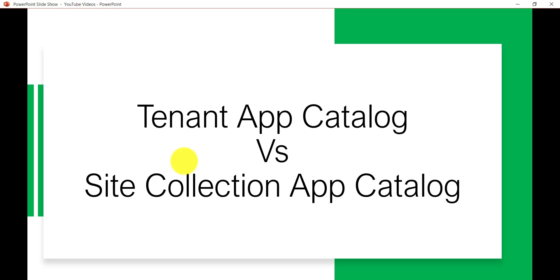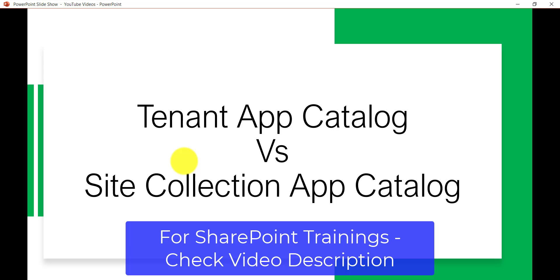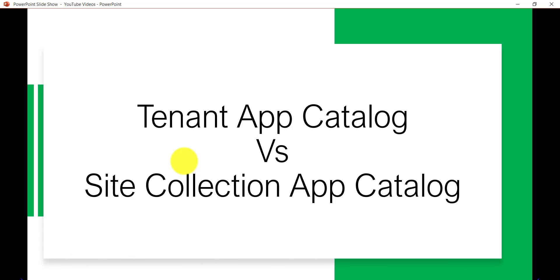Apart from that, you will have only one app catalog — both at the site collection level and at the tenant level — so we cannot create multiple. Also, you require tenant-level administrator privileges to create both the tenant app catalog and the site collection app catalog.